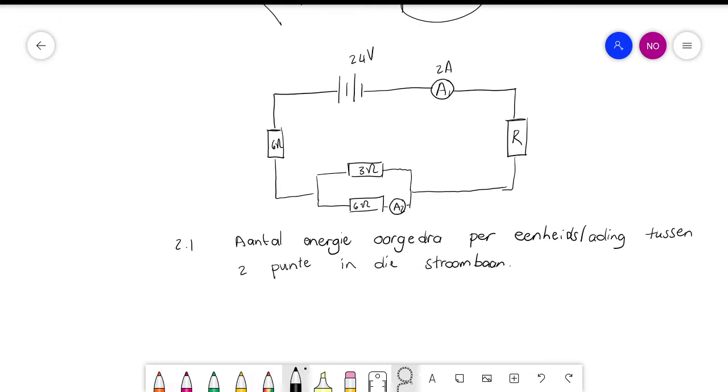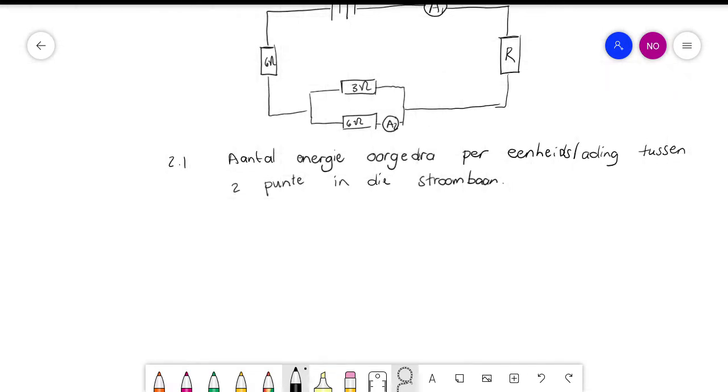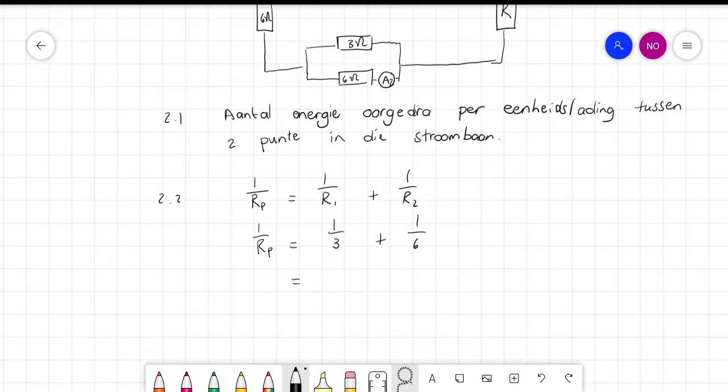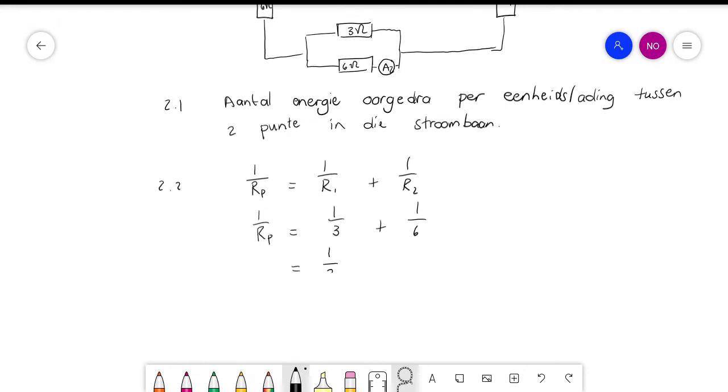Calculate the effective resistance of the parallel part. So you start off by writing your formula. Is it one of two? Yeah. So in other words, R_P is 2.